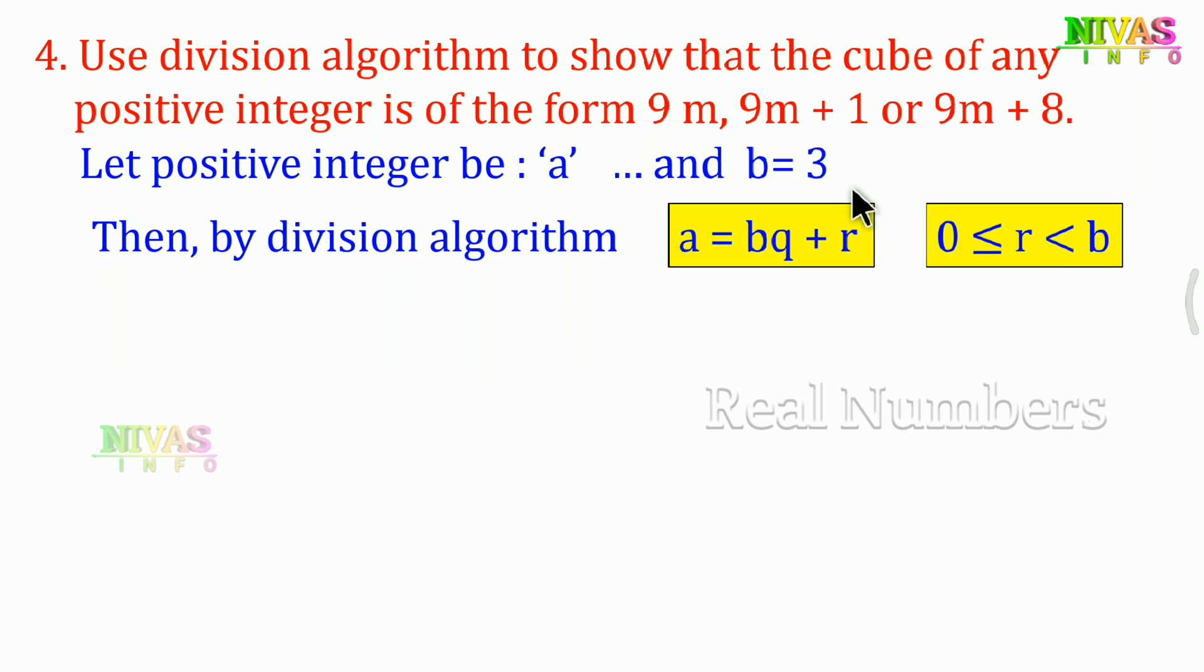Since b=3, our condition is r < 3. The possible remainders are 0, 1, and 2.